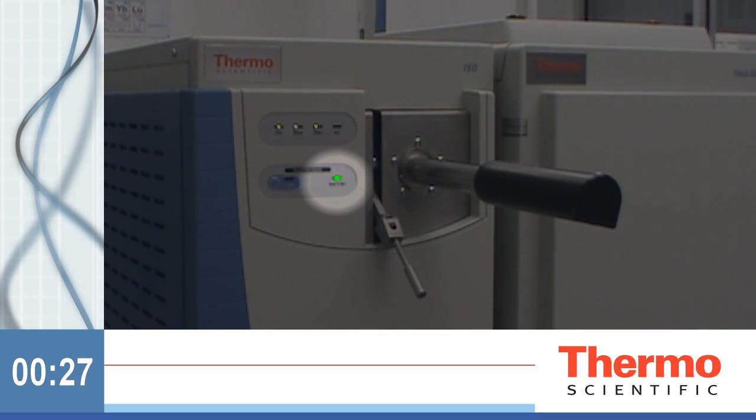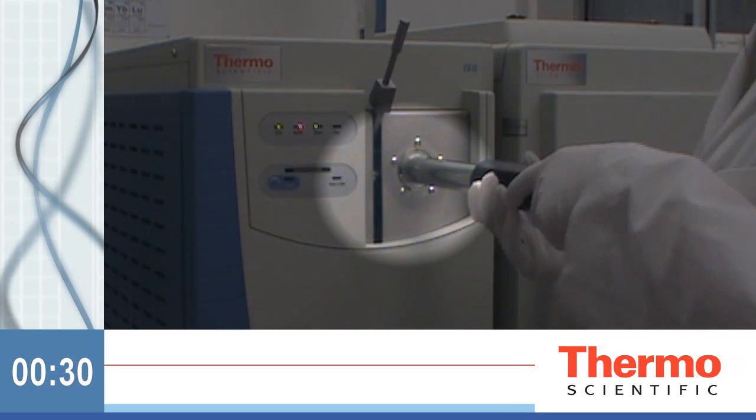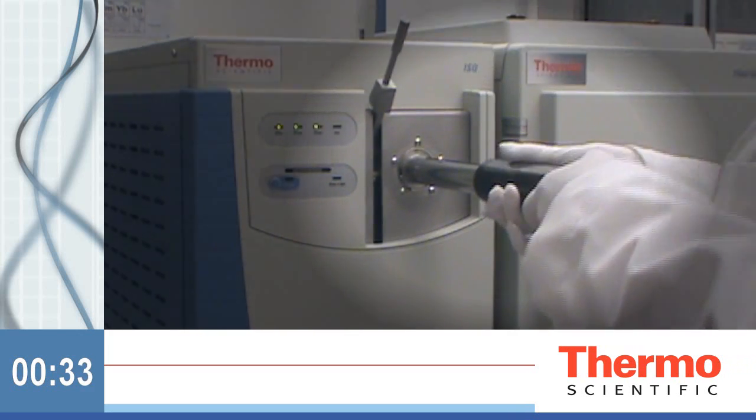When the ready to open light goes green, open the valve, insert the tool, connect to the ExtractaBrite cartridge, then retract it.